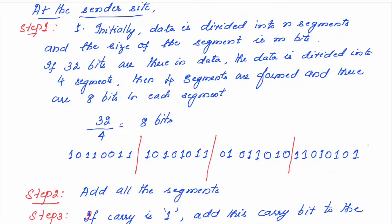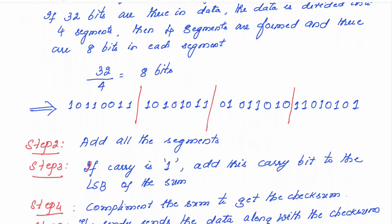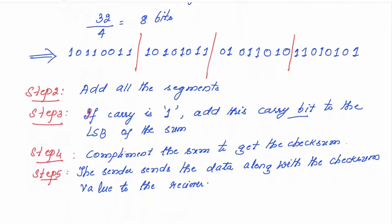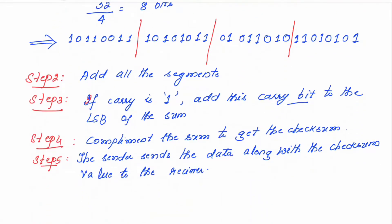Step 5: the sender sends the data along with the checksum value. Let me just repeat the steps. In step 1, there is some 32-bit data. This 32-bit data is getting divided into 4 segments, each segment consisting of 8 bits. In step 2, the sender will add all these 4 segments. In step 3, whenever there is a carry generated, that carry bit has to be added to the LSB of the sum. Then complement the sum. Whatever bits you get in the sum, you take the complement and the result is called as the checksum. Finally, the sender sends the 32-bit original message along with the checksum value — those 2 details will be sent to the receiver.